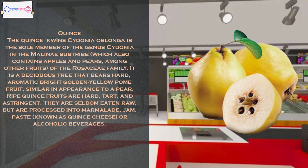Quince, Cydonia oblonga, is the sole member of the genus Cydonia in the Maleae sub-tribe, which also contains apples and pears among other fruits, of the Rosaceae family. It is a deciduous tree that bears hard, aromatic bright golden yellow pome fruit, similar in appearance to a pear. Ripe quince fruits are hard, tart, and astringent.